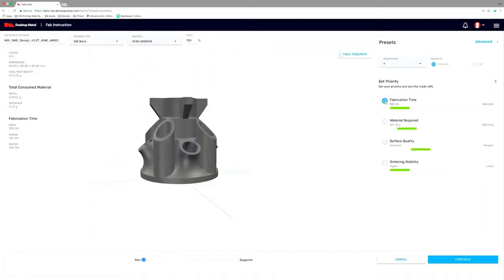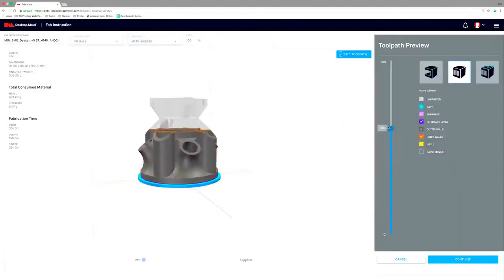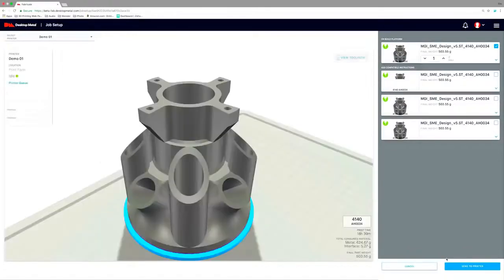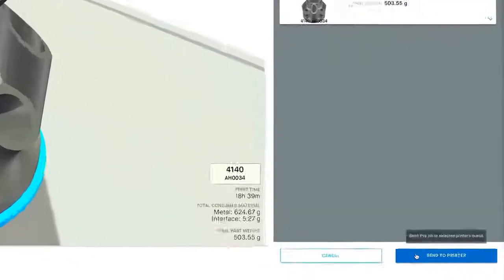The user can interact with the part and view precise toolpaths through a dynamic interface. It then creates a unique build plan and identifies compatible parts from the queue that can be fabricated together.